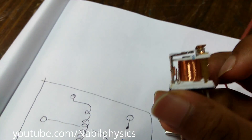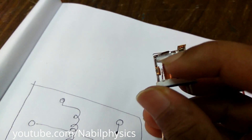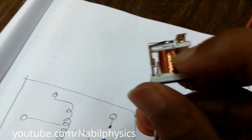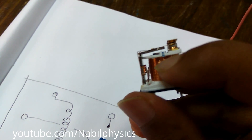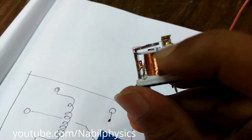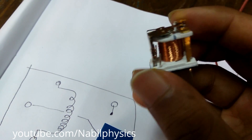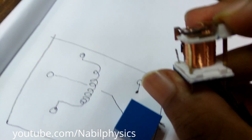Now we have to look at this — the electromagnet. This electromagnet is here, and this is the one that we have here. Now we have to look at this carefully.